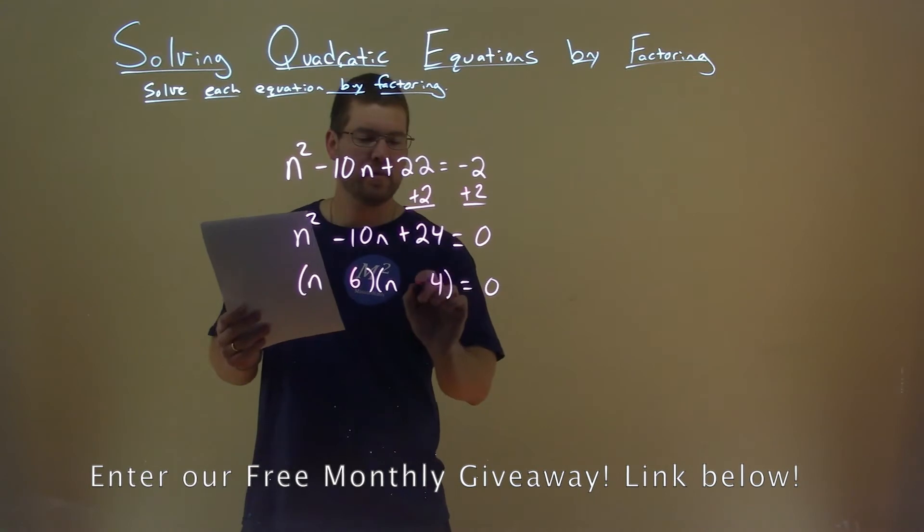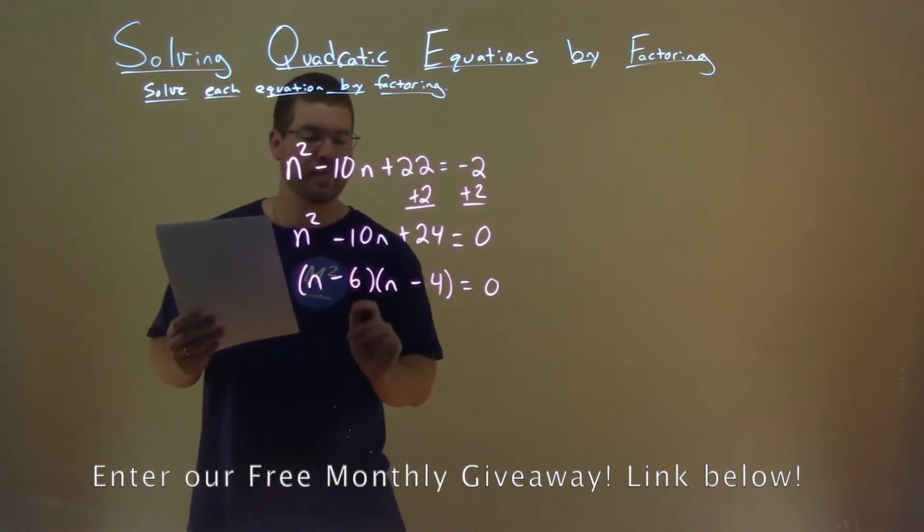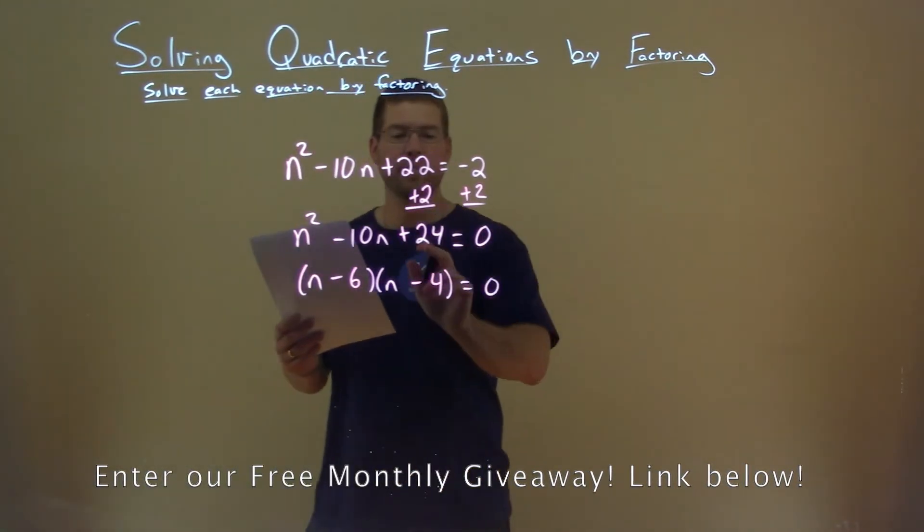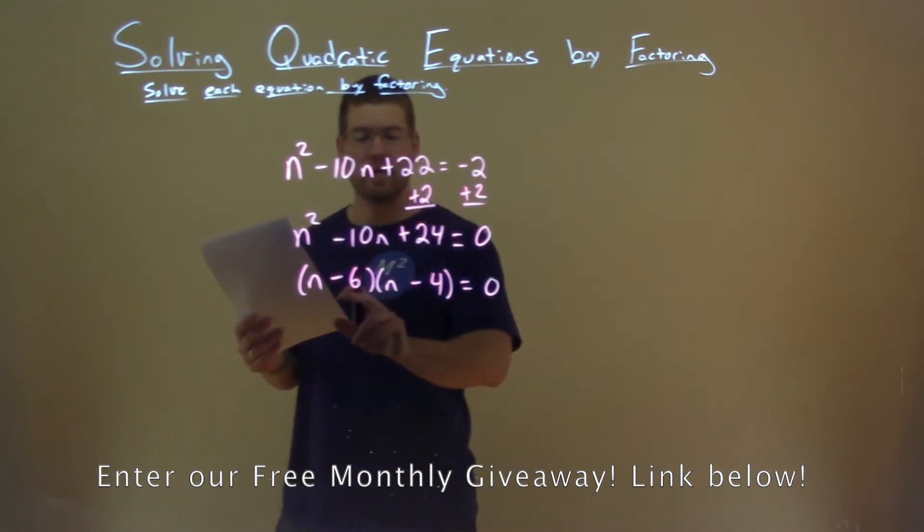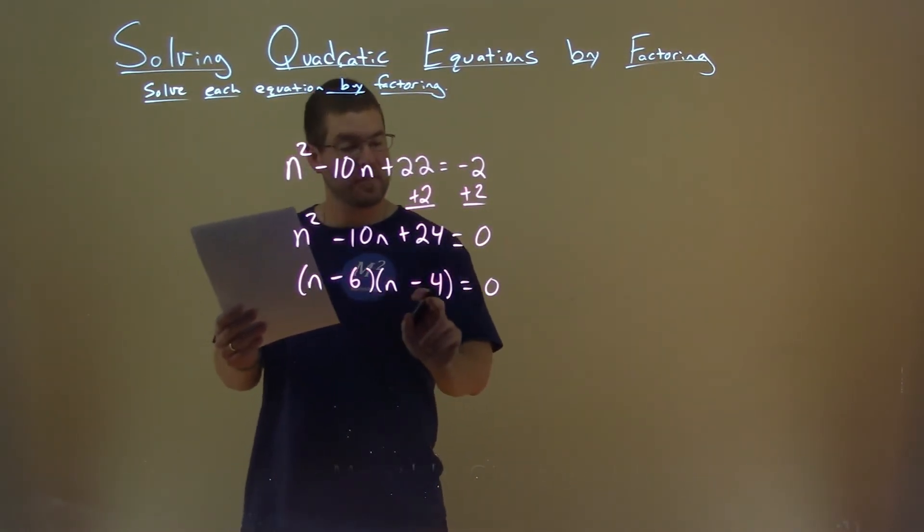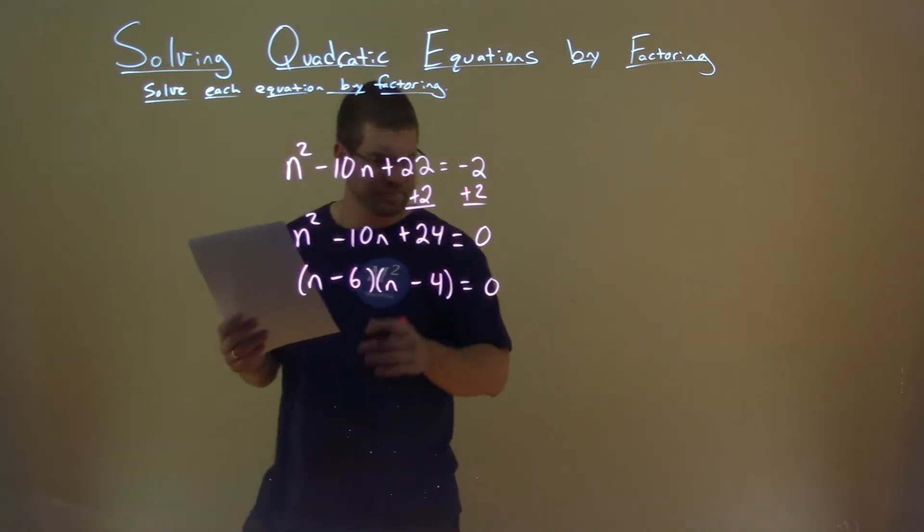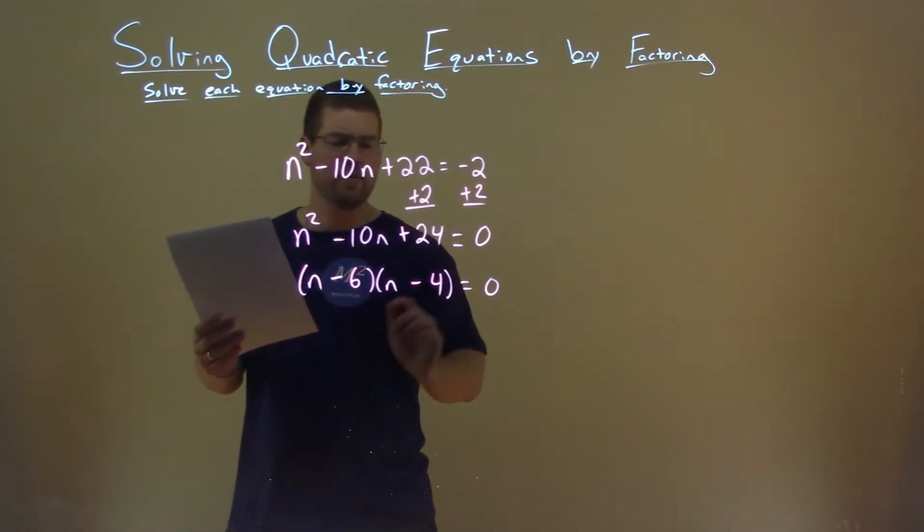6 here, 4 here, well it really doesn't matter, but they're both negative. Negative 6 times negative 4 is a positive 24. Negative 6 plus a negative 4 is a negative 10, alright? So now we have it in factored form.